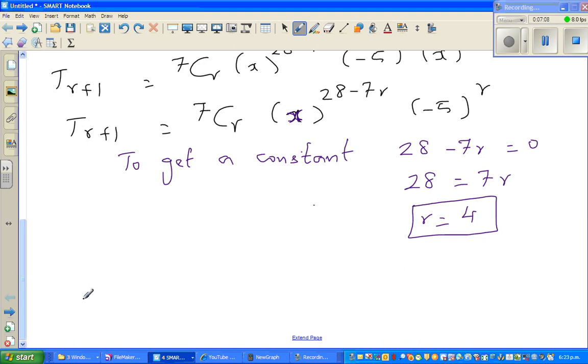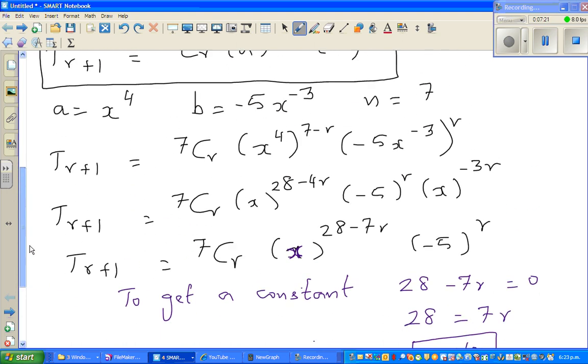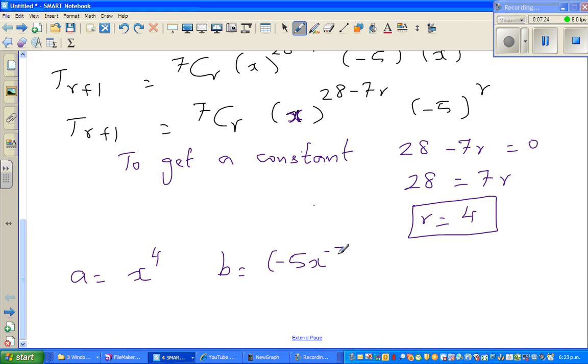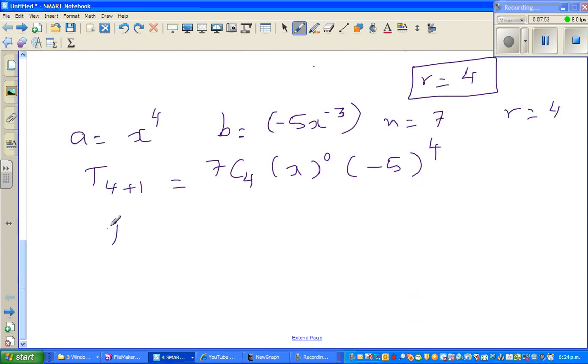So now this becomes T, let me rewrite. What's the a? a is x to the power 4. What is b? b is minus 5x to the power negative 3. Your n is 7 and your r is 4. So let us put this in this form. So this is T sub 4 plus 1, is equal to 7C4, times x to the power, if you put 4 here, 28 minus 28 is 0, times minus 5 to the power 4.